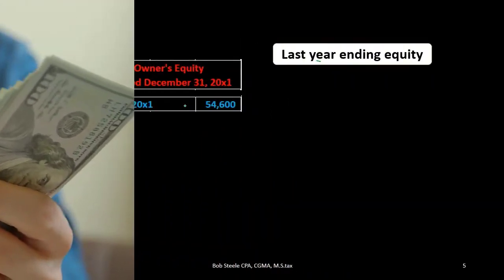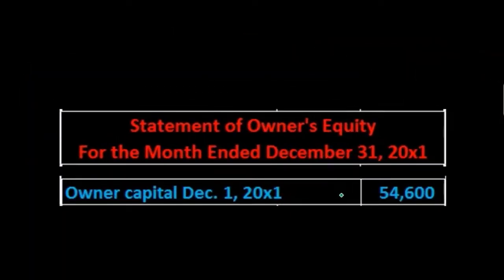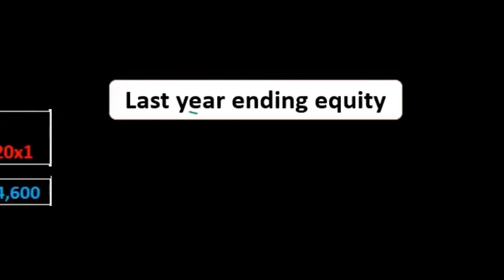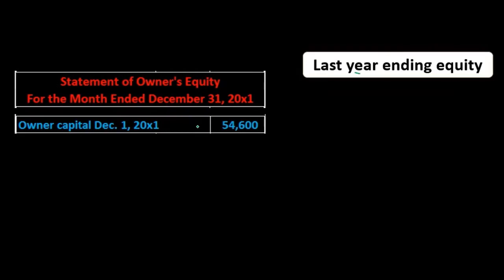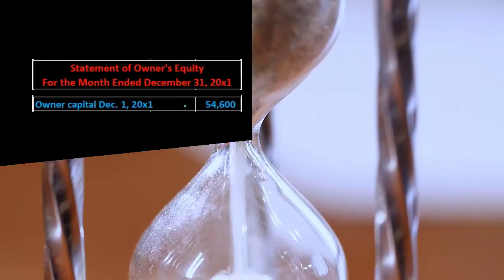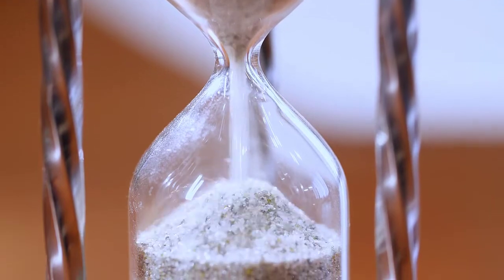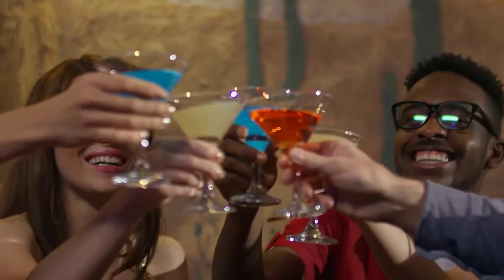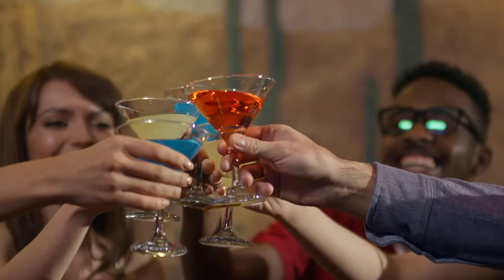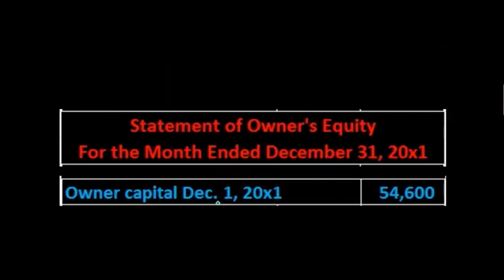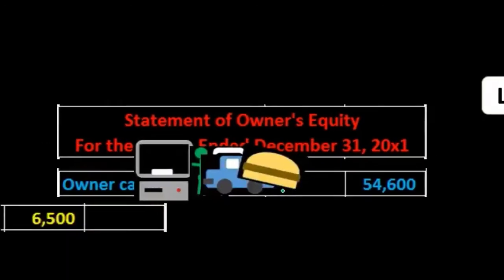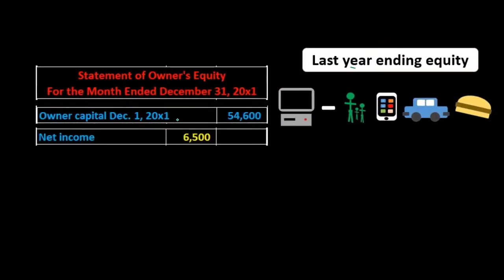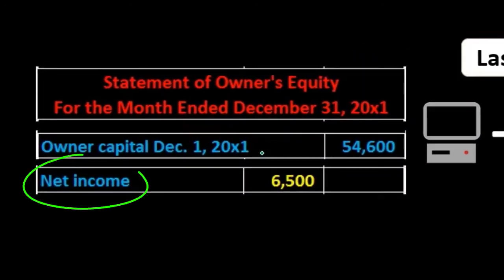Typically we look at our trial balance. The amount reported in the capital account on the trial balance is often the beginning capital. We go to the general ledger to see if there's any activity during the time period; if there's none, the amount on the trial balance is essentially the beginning balance. Keep in mind that the trial balance typically does not report the date, so you'll take this number directly from the trial balance and assign December 1st as the beginning date.